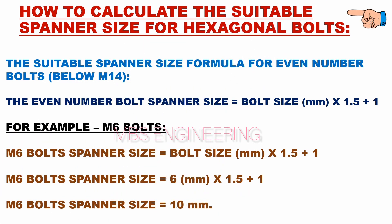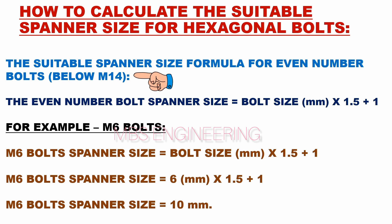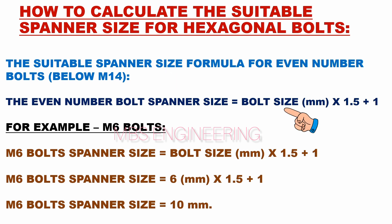The suitable spanner size formula for even number bolts below M14 grade is as follows: the even number bolt spanner size equals bolt size in mm multiplied by 1.5, plus 1.